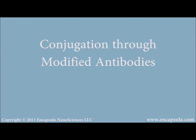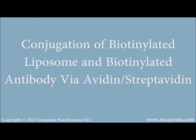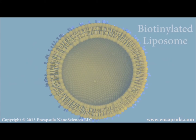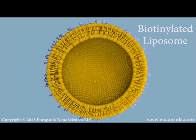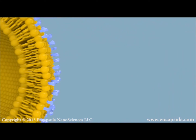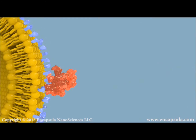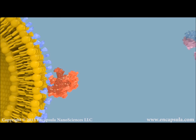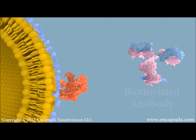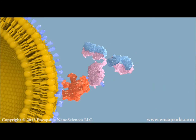Biotinylated PE, when inserted into a liposome, can bind to the biological target avidin through noncovalent interactions. Using avidin or streptavidin as a bridging molecule, biotinylated antibody can be linked to biotinylated liposomes. Streptavidin is sometimes conjugated directly to the antibody, requiring only a single binding event to link the antibody to the liposome.